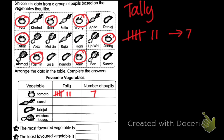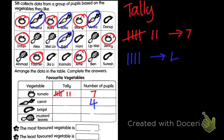Now let's count carrot. How many students like carrot? Let's see — one, two, three, four. Only four. So how to write it in tally: one, two, three, four. This is four. Remember how to write in tally.